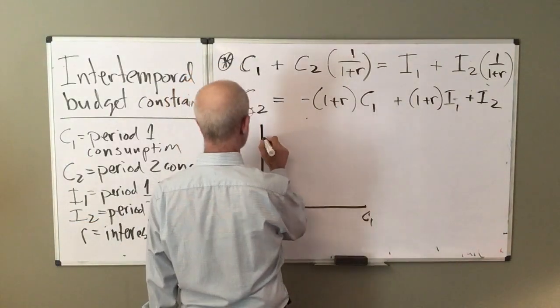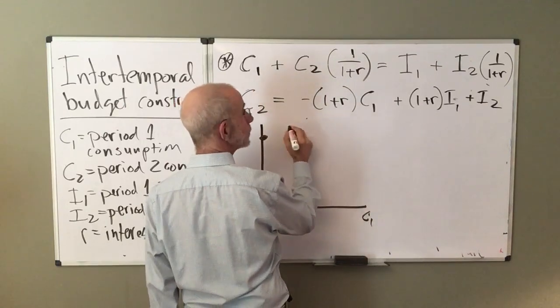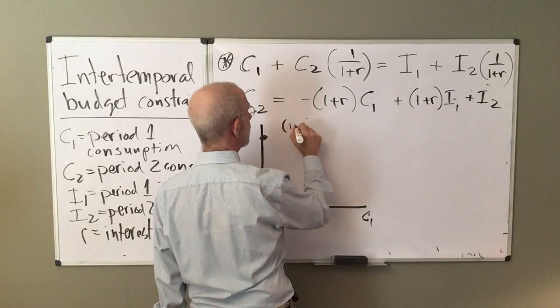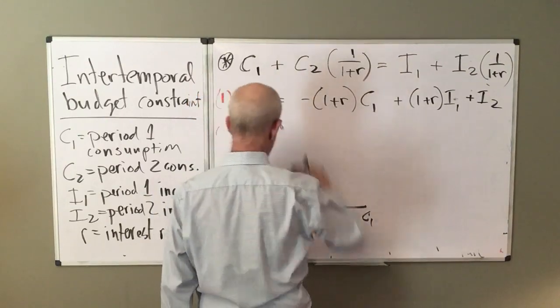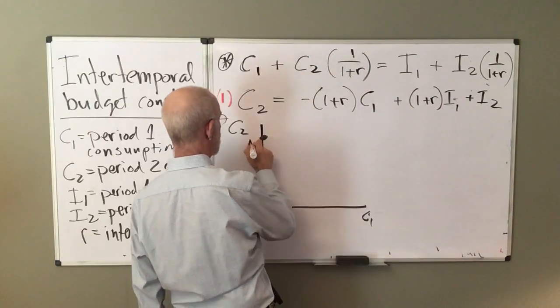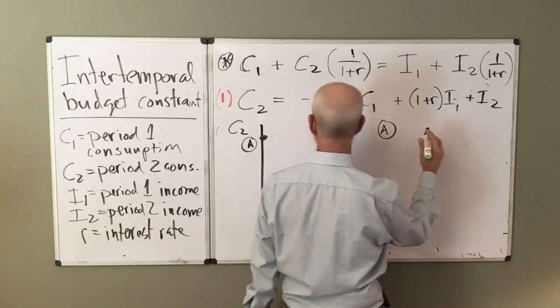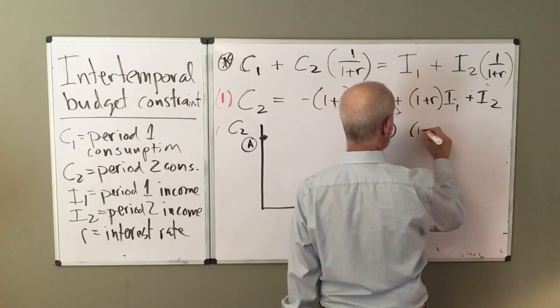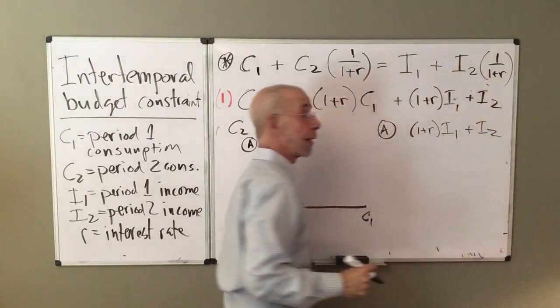So looking at this equation, if C one is zero, that makes this disappear. So what I would get, the maximum amount of consumption in period two, it's whatever my income is plus the interest income from all of that income that I didn't use to buy stuff in the first period. So this is one plus R times, actually, let me do this slightly differently. So point A is going to be one plus R times I one plus I two.